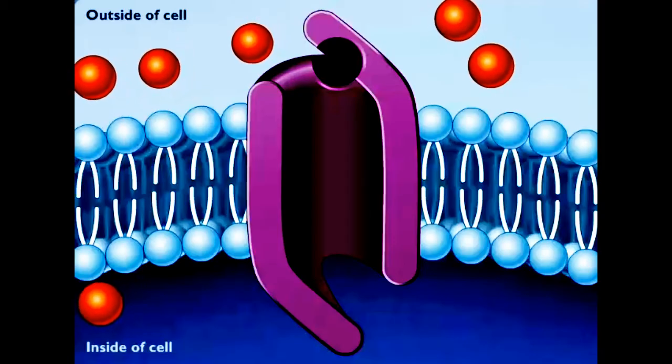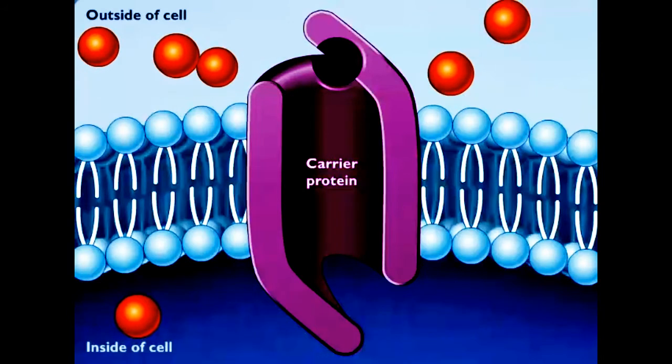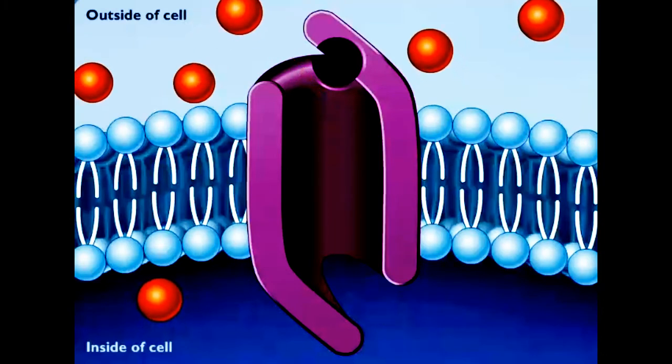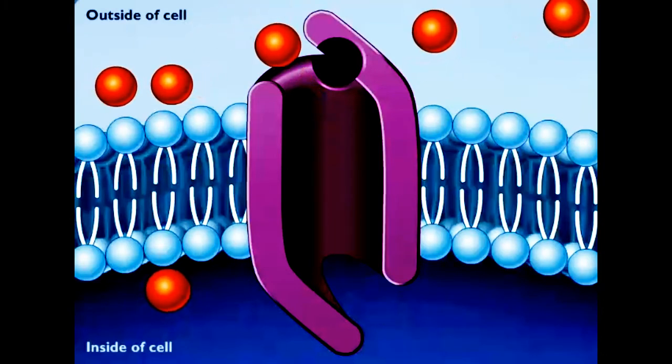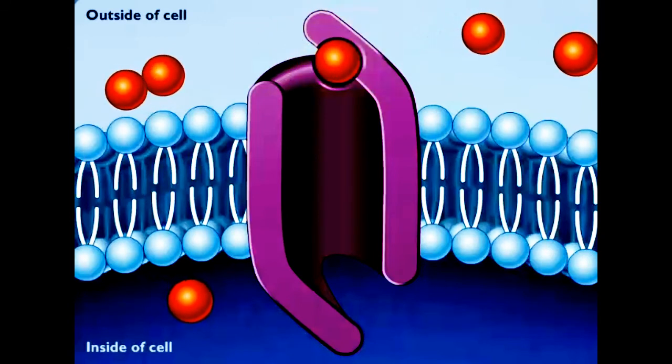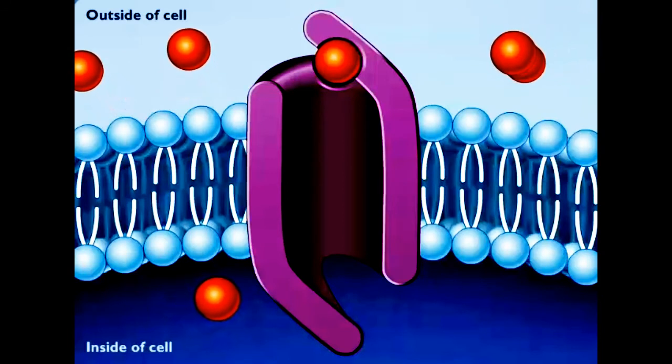In the process known as facilitated diffusion, a special carrier protein with a central channel acts as a selective corridor which helps molecules move across the membrane. These special carrier molecules that form the protein channel bind only to a specific molecule, such as a particular sugar or amino acid.